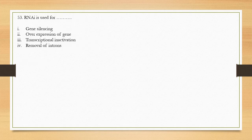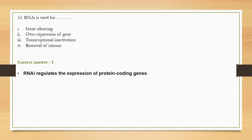Question number 53: RNA interference is used for — options are gene silencing, overexpression of gene, transcriptional inactivation, and removal of introns. The correct answer is option 1, gene silencing. RNA interference is an in-built mechanism for regulating the expression of protein-coding genes — it allows regulation of the mRNA and thus the protein produced from a gene.